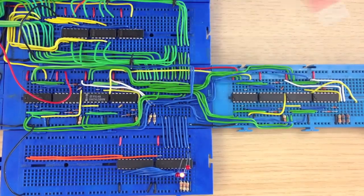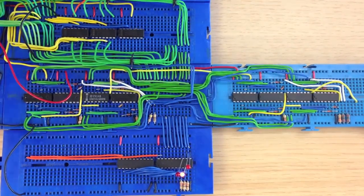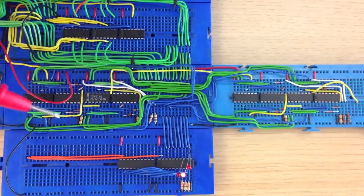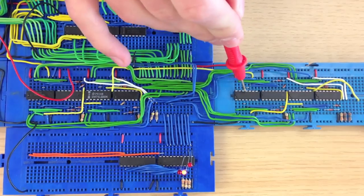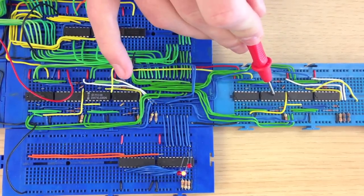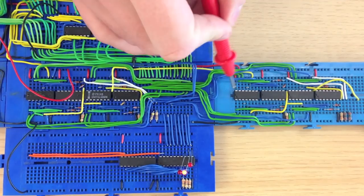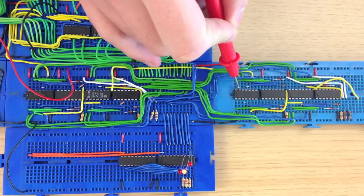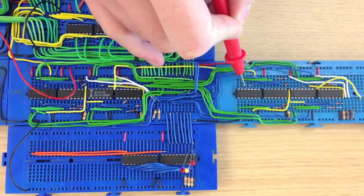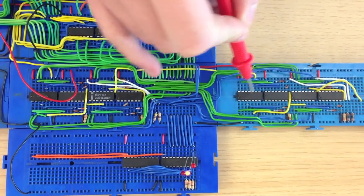These two boards right here are 8-bit ripple adders. And the reason why they look so complicated is because when you get the components, the XORs and the ANDs, you get them arranged like this. So this is an input, input, output, input, input, input, output.